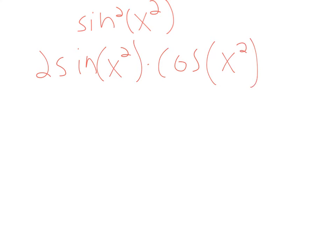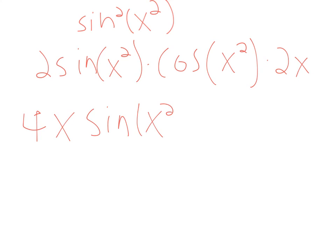And then because of the x squared you would also have to multiply by 2x. So in the end it would be 4x sine of x squared times cosine of x squared.